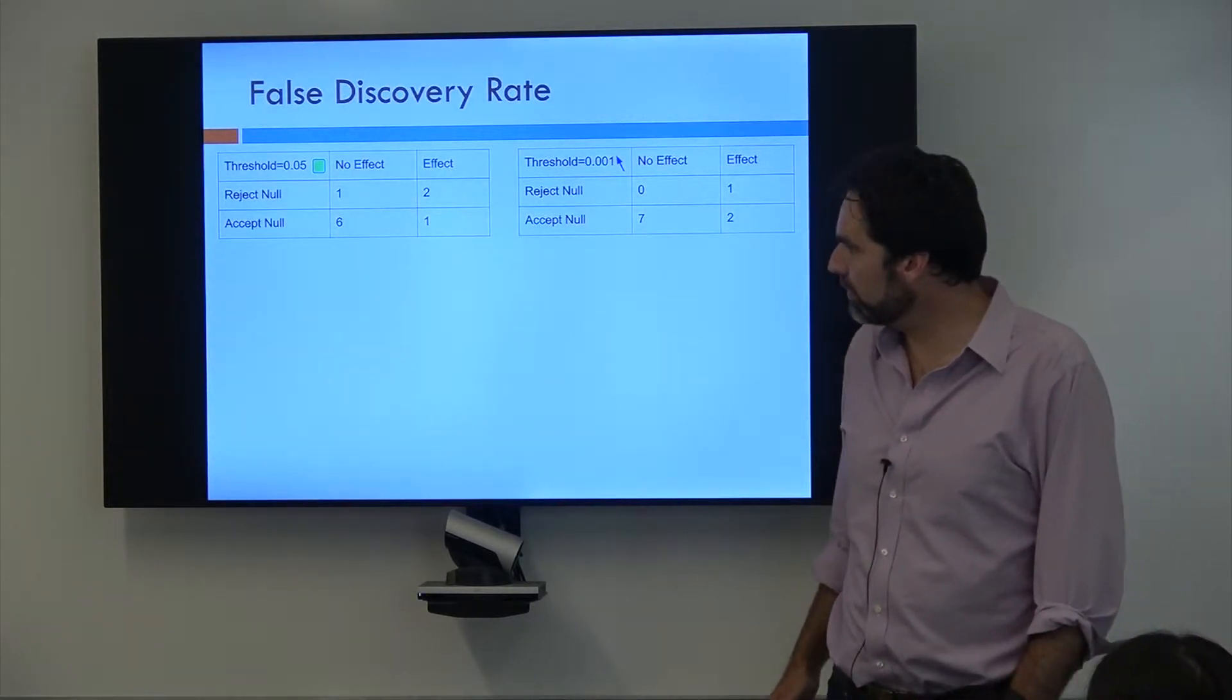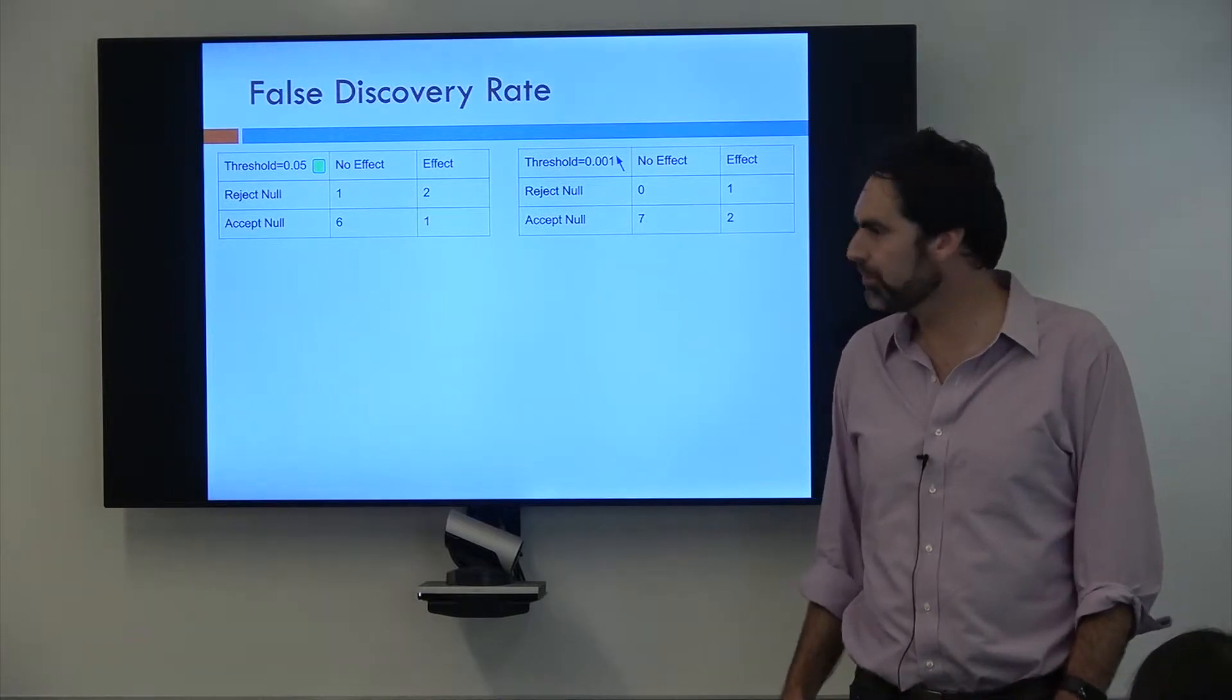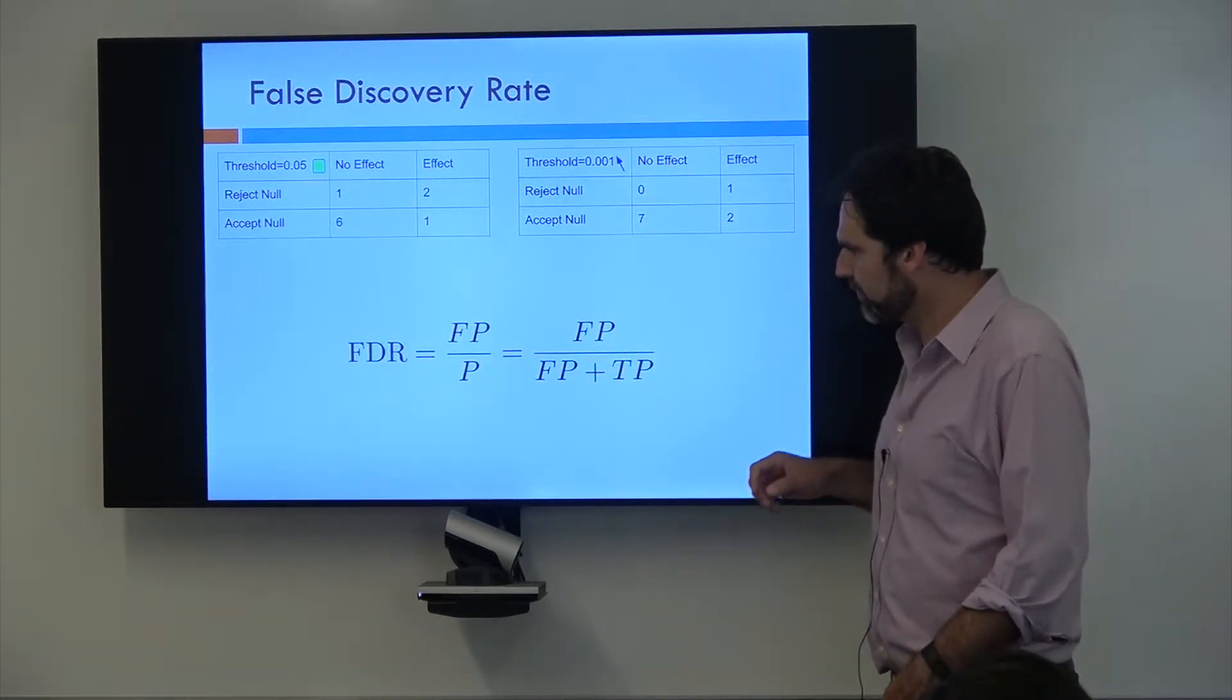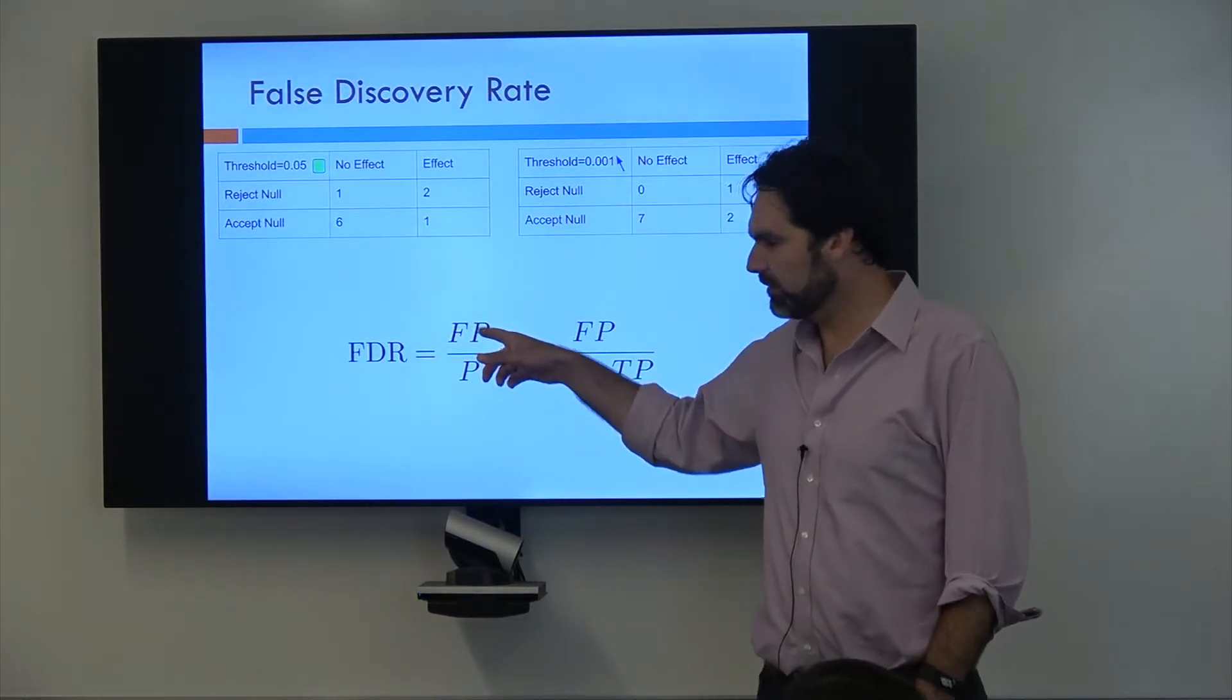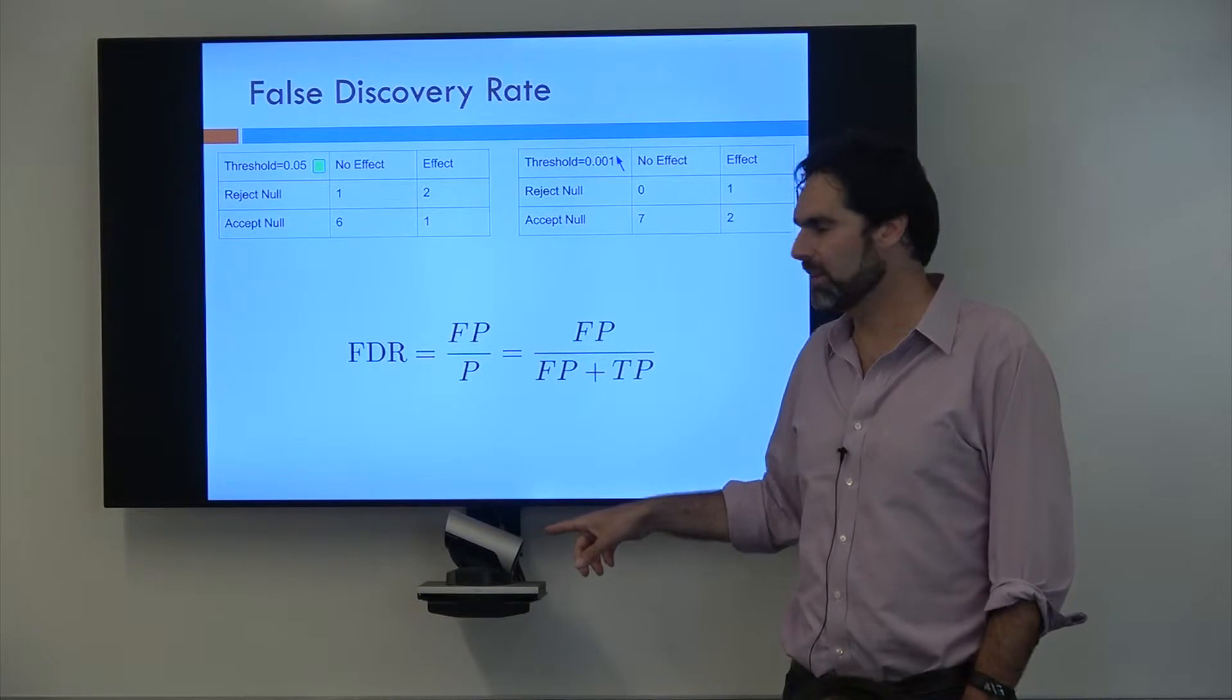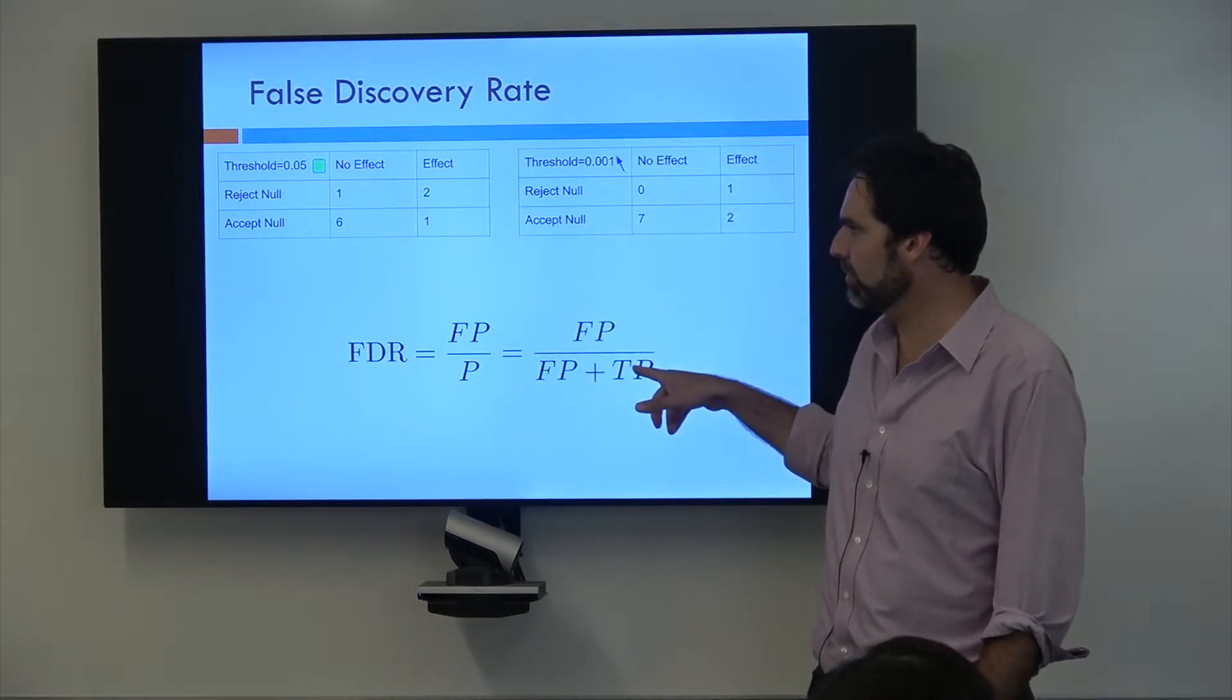So as we adjust this threshold, one thing we can start calculating is what's called the false discovery rate. And the false discovery rate, it's the number of false positives that you have divided by the number of positives you have. And where the number of positives is simply the number of false positives and true positives.